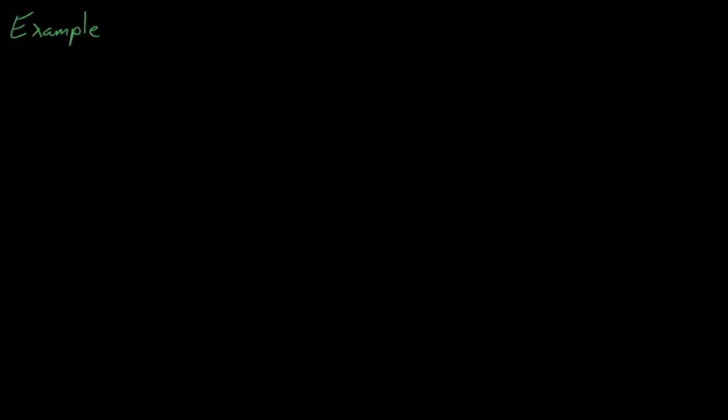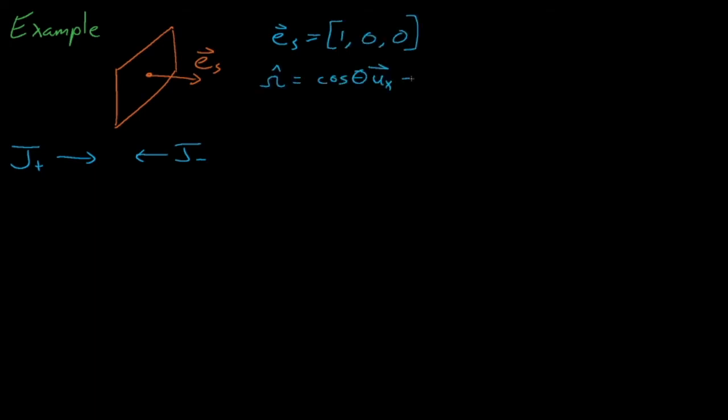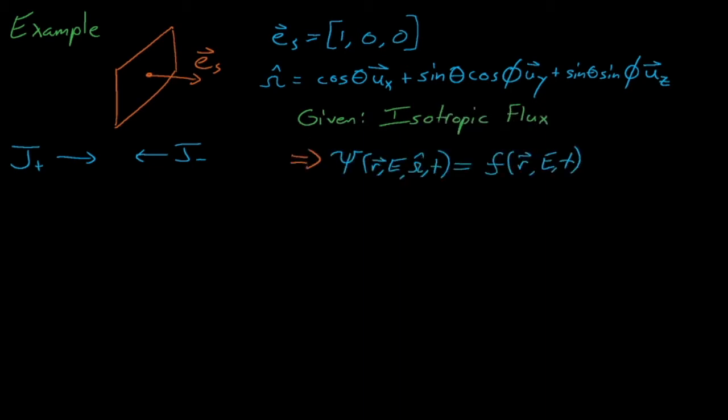Let's work a quick example by computing j+ across some surface facing the positive x direction given an isotropic flux. Because the flux is equally probable in all directions, an isotropic flux is not a function of theta, which means that the angular current density is equal to omega times this omega independent function f. We'll define f for real later on, but for now let's just say that it's this ambiguous function.